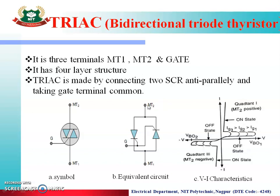then current will flow from MT2 to MT1 through this thyristor. If MT1 is positive, then the current will flow from MT1 through this thyristor to MT2. Therefore, current flows in both the downward and upward directions — that is, current will flow in both directions. Therefore, TRIAC is a bi-directional device.